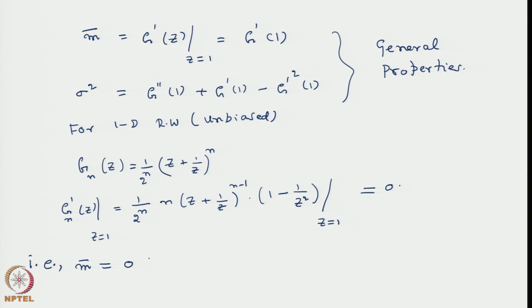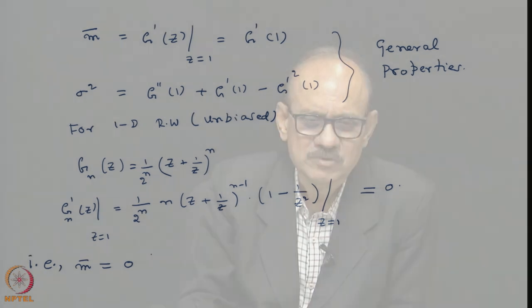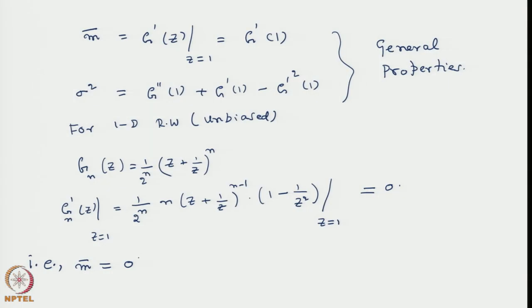On average, if you look at the walker's position, it will be 0 - he will essentially be where he started. This is the common perception: going randomly both left and right is of no use because you remain where you are. However, the interesting part is it is not just the mean that decides its extent of displacement, but the variance around that mean.